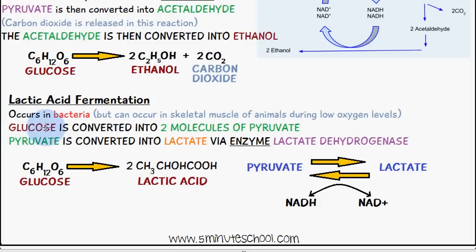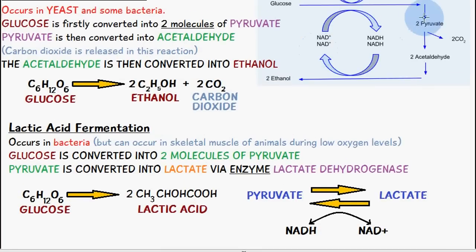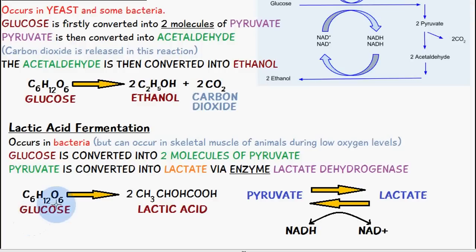Glucose is converted into two molecules of pyruvate. Similar to this schematic diagram, glucose is converted into pyruvate, and then pyruvate is converted into lactate via the enzyme lactate dehydrogenase. Here is a schematic diagram showing lactic acid fermentation.